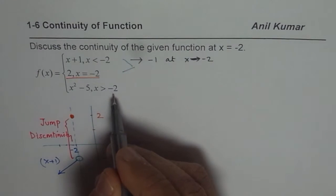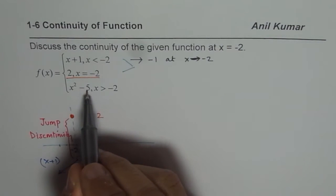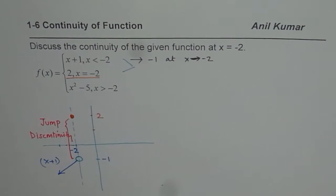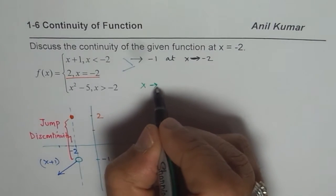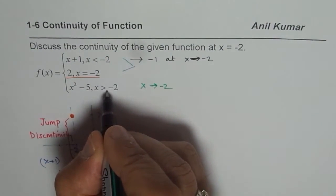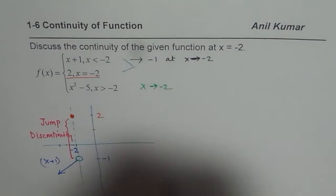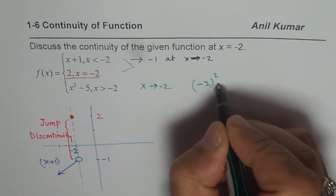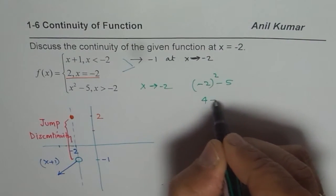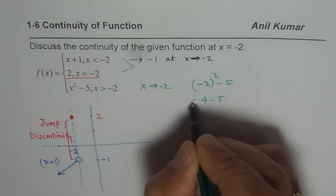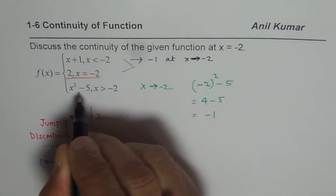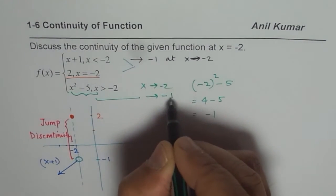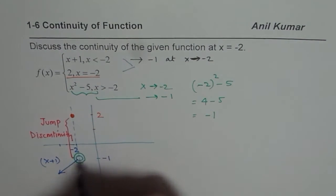Now let us look into the next piece of the function. It says x square minus 5, x greater than minus 2. So for this piece, as x approaches minus 2, what value does this function approach? So we will substitute minus 2 here. So we will substitute minus 2 square minus 5. Minus 2 square is 4. 4 minus 5 is equal to minus 1. So that means that this piece actually approaches minus 1. So it approaches the same value.